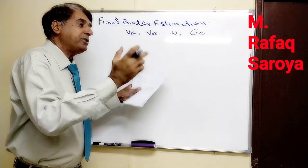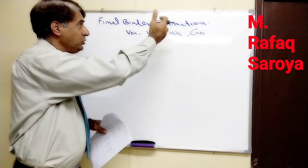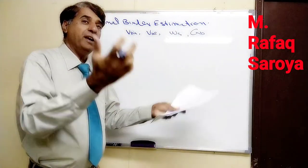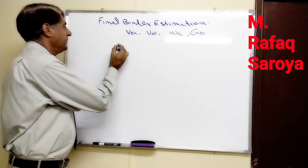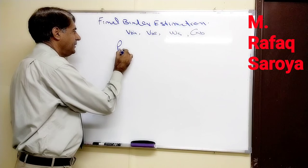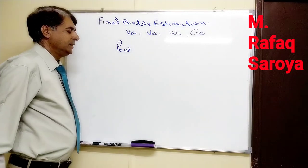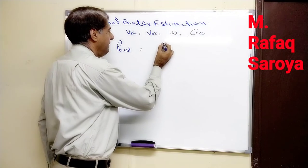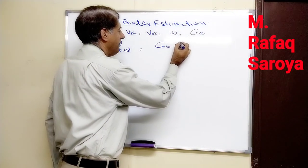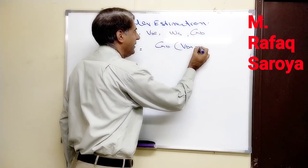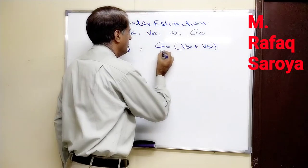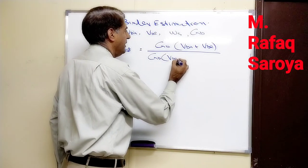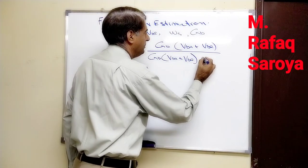Now we have reached the conclusion that all those values which I discussed related to binder estimation in my previous video, we will combine them and reach the final conclusion. We can say that PBEST - which means the final binder estimation for further trial purposes - is given by: GB times VBA plus VBE, divided by GB times VBA plus VBE plus WS.